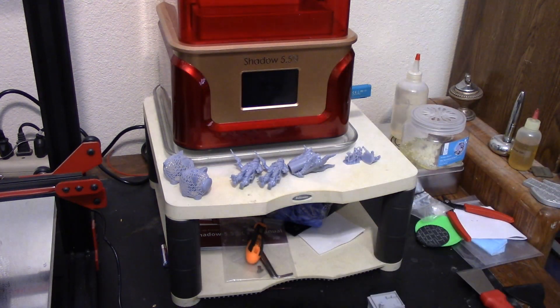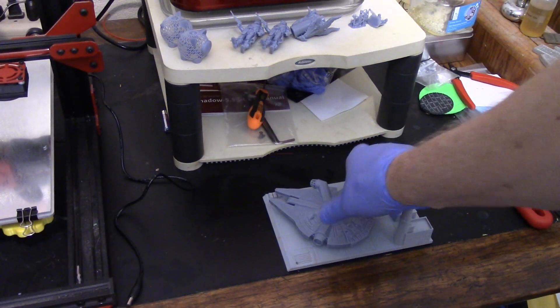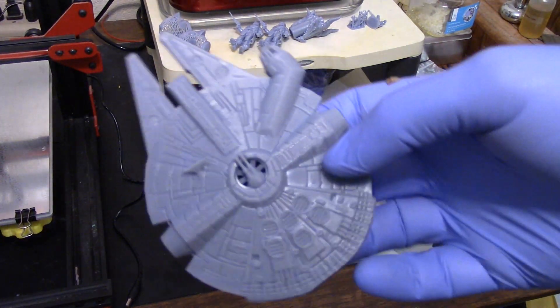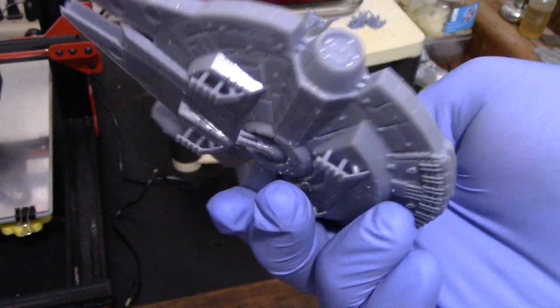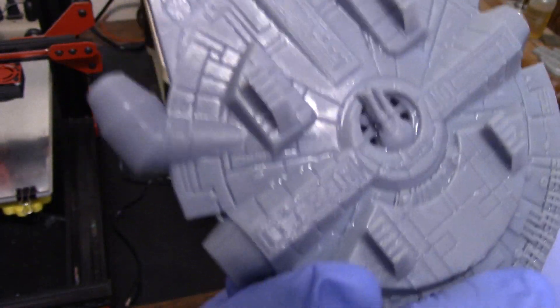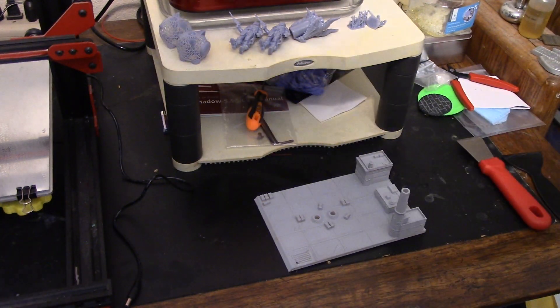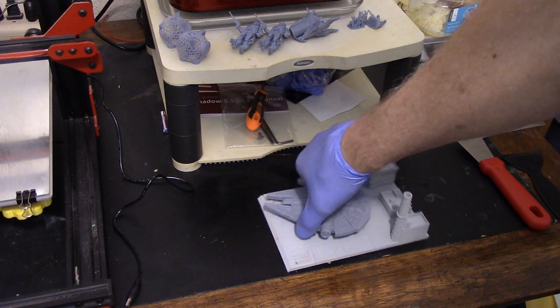I got a, you can see, is it in the shot? I got a little, printed a little Millennium Falcon. It turned out really, really nice. I had to do the supports on that myself. The little landing pad I made, I printed on one of the FDM printers.